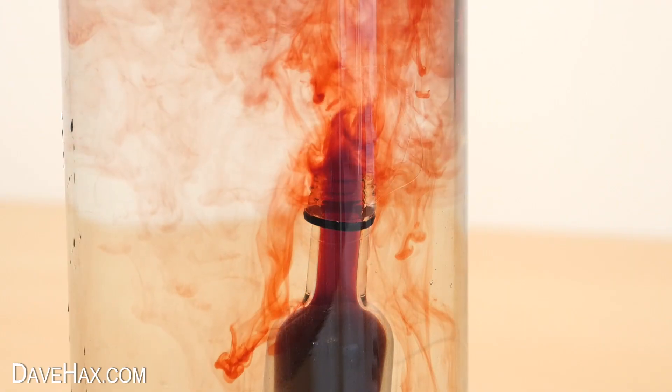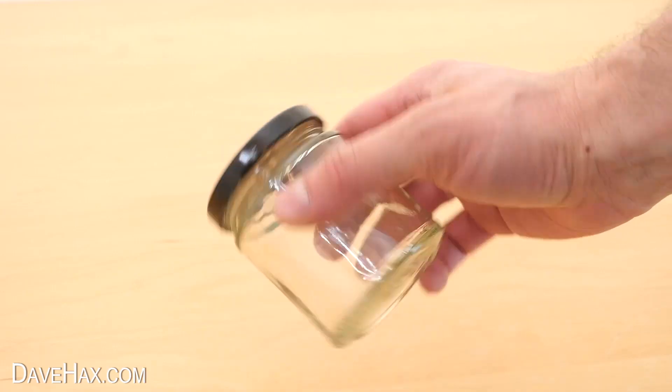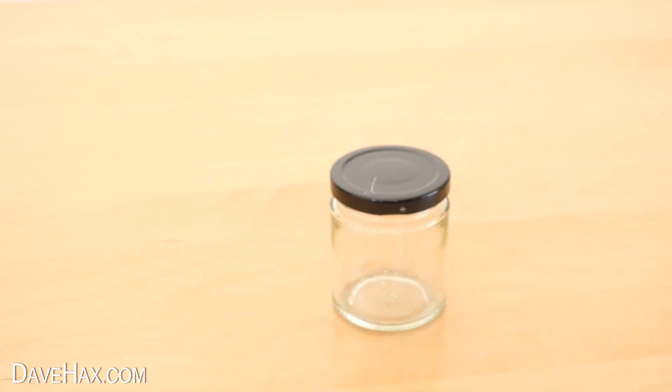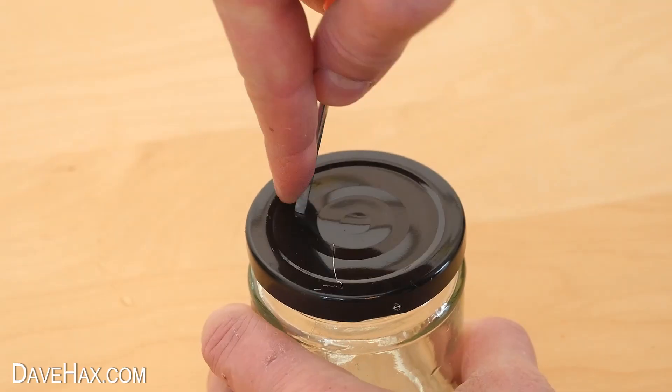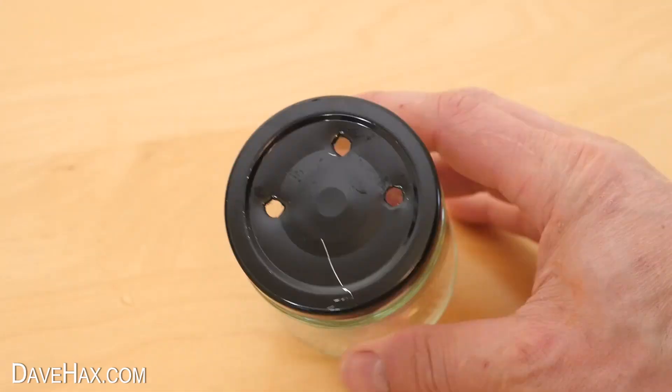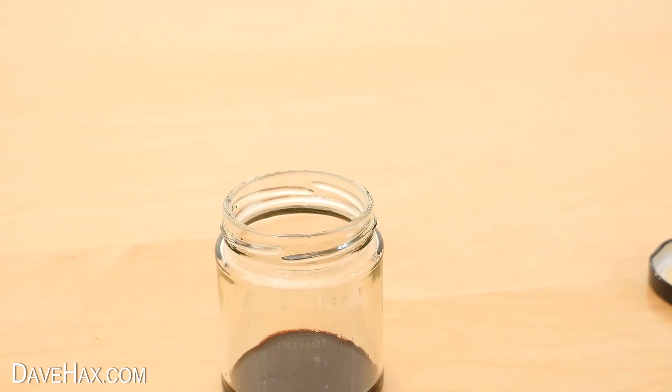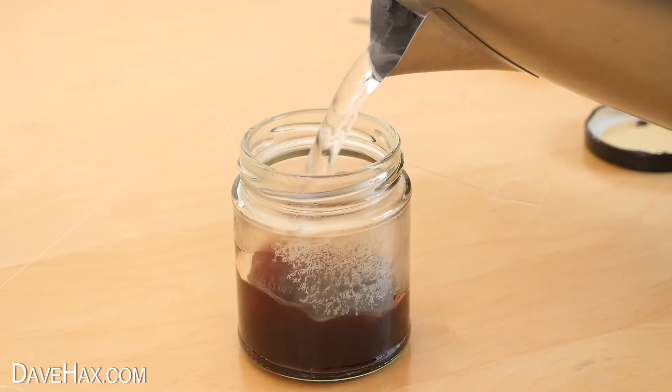I decided to try doing this same experiment with a glass jar. I used a screwdriver to pierce three holes in the lid. Then I tied on some string and added some food coloring and filled it with hot water.